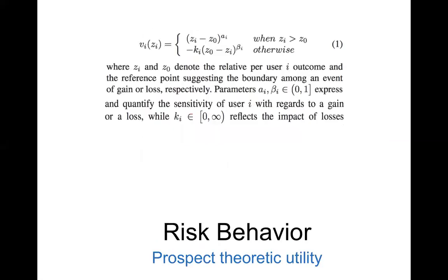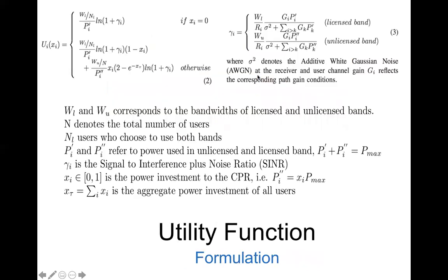Using a prospect-theoretic approach, the user's utility can be modeled using two functions that consider two aspects of user attitudes: one toward gain and another toward loss. Here, z_i represents the relative user outcome for user i and z_0 is the reference point. The overall utility will be positive if the relative user outcome is greater than the reference point, and negative if it is less than or equal to the reference point.